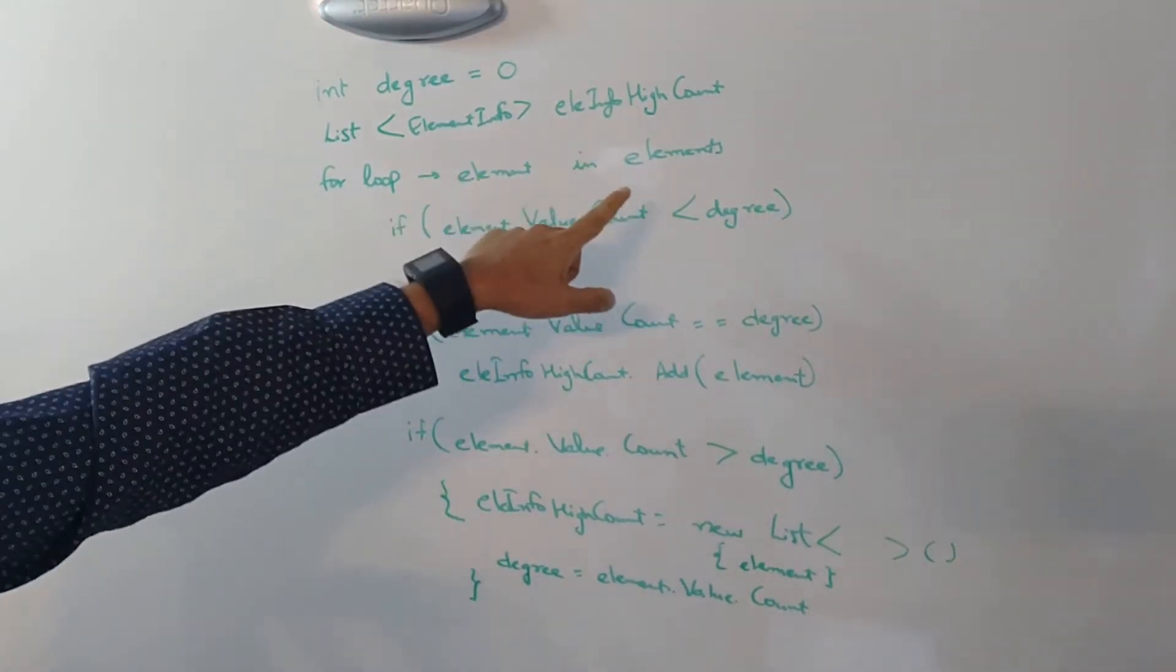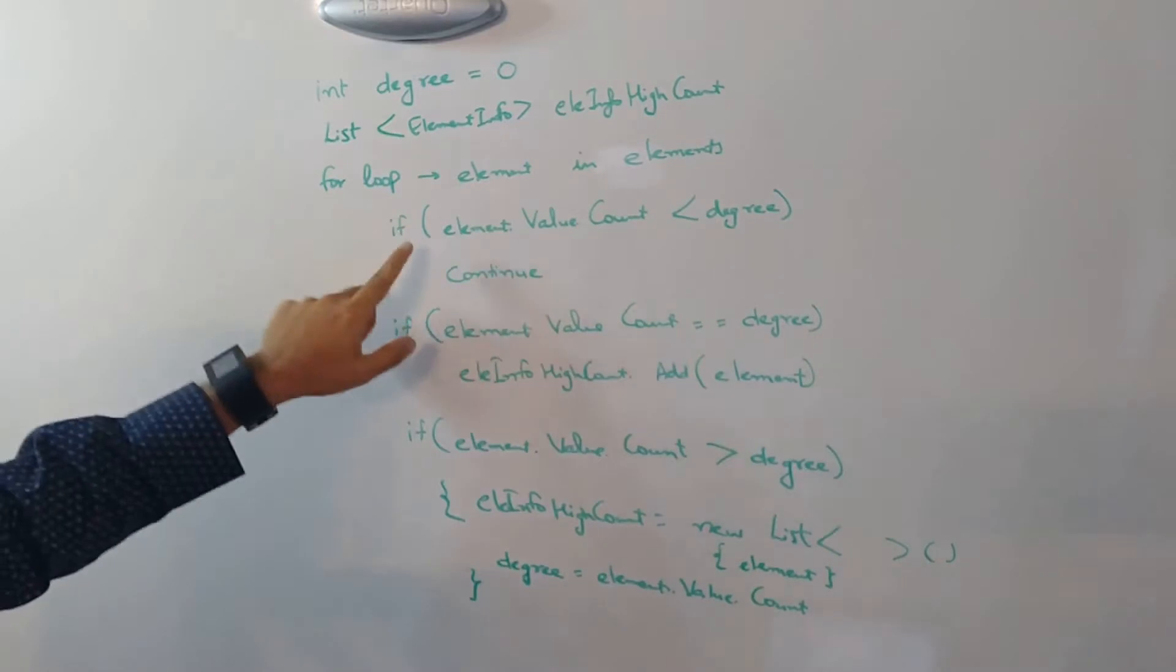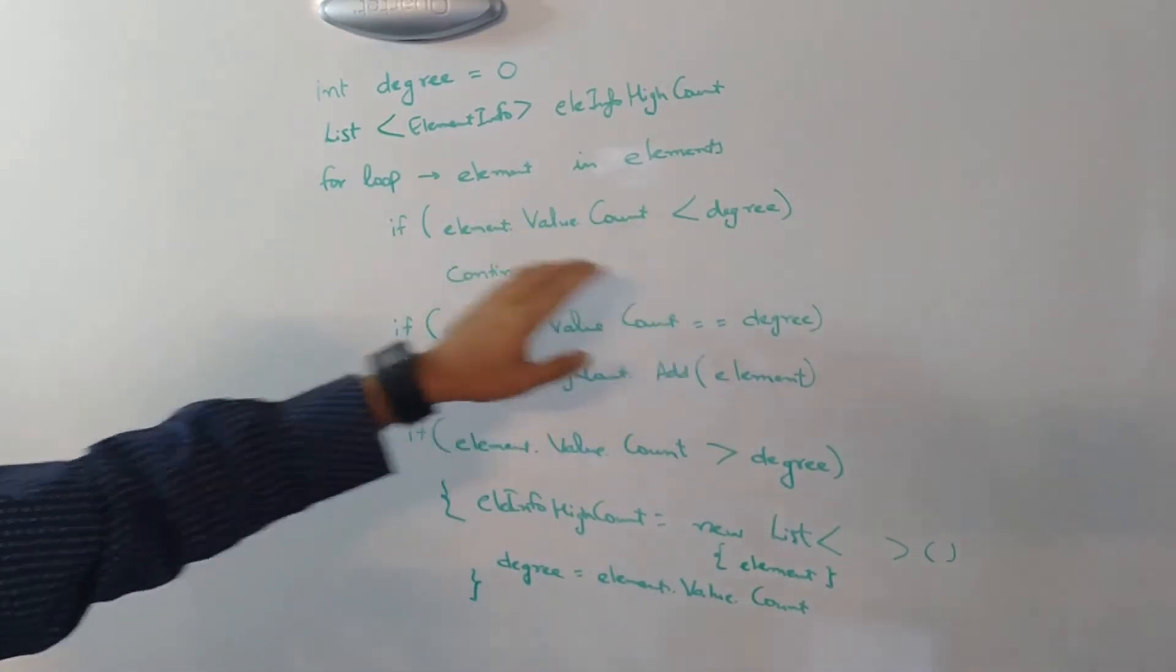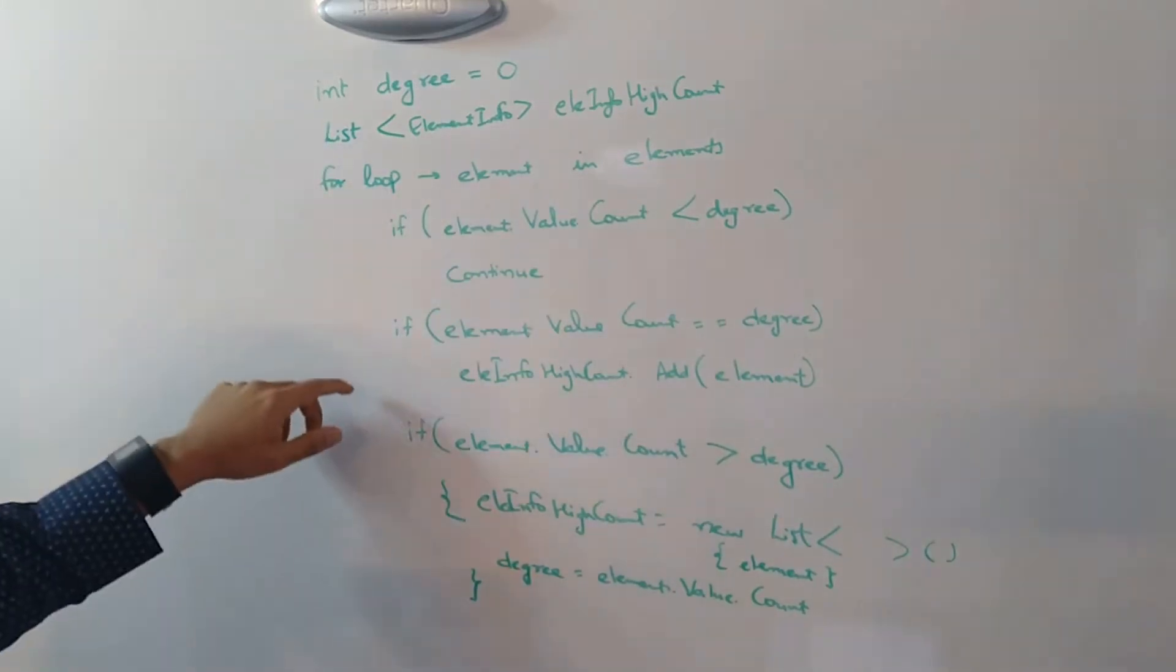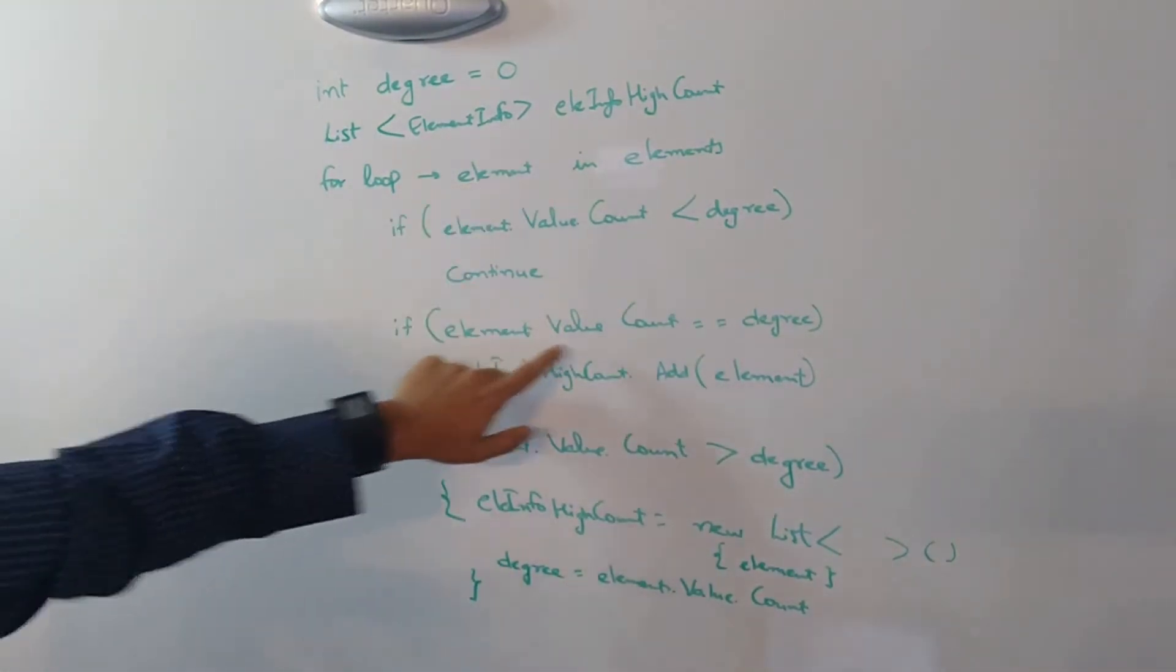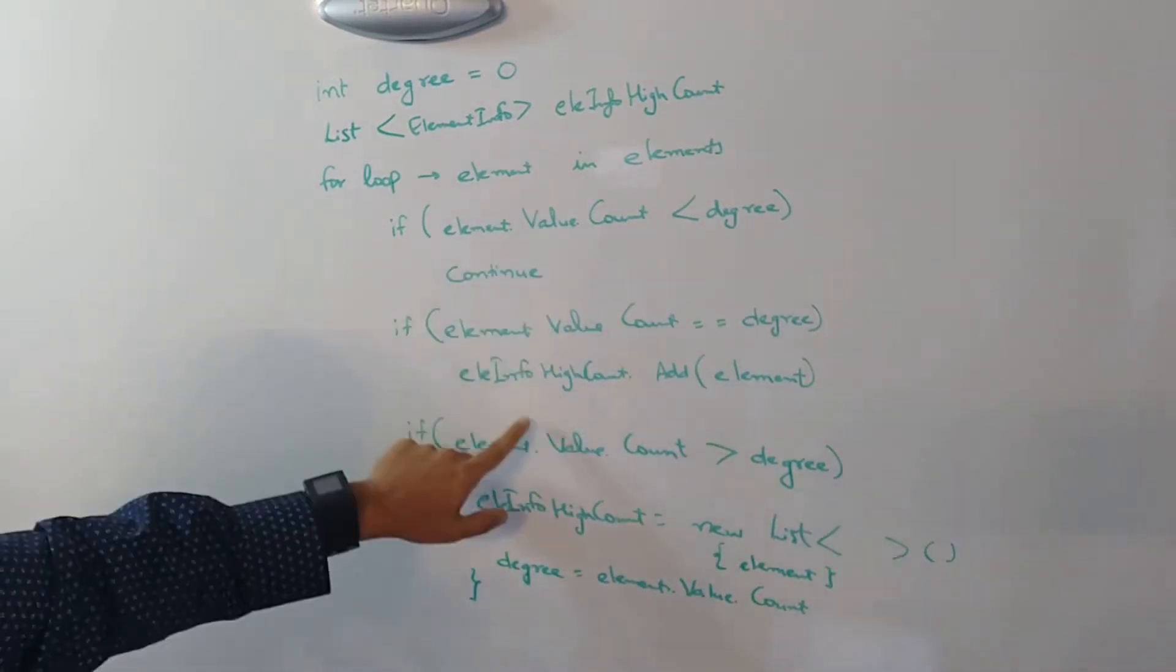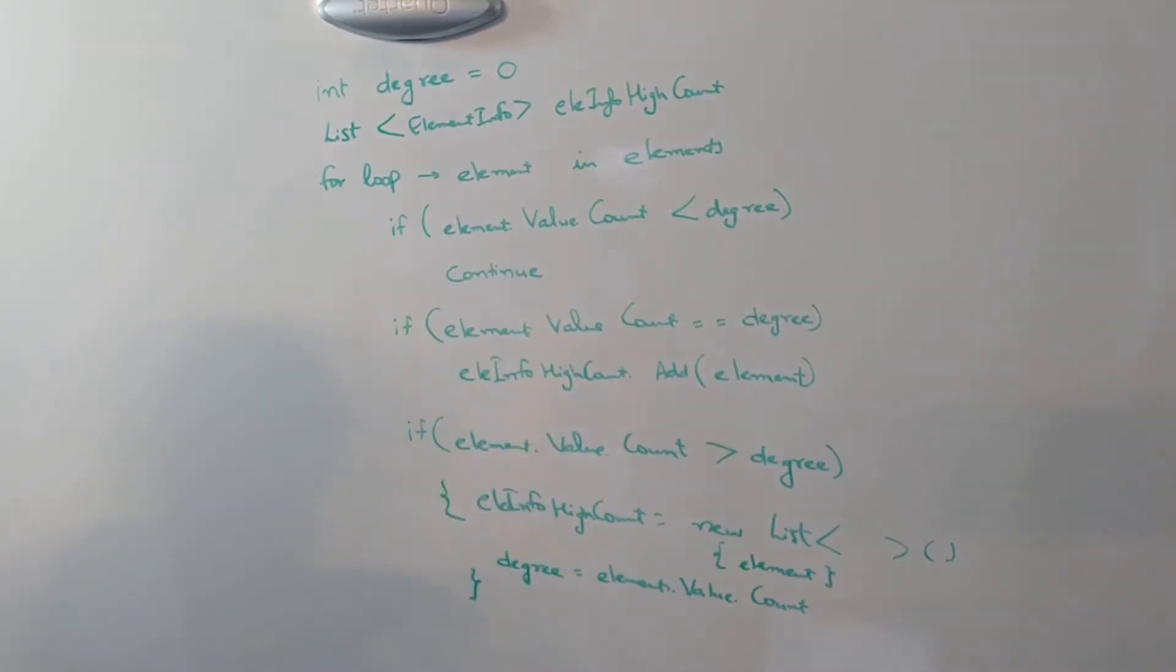Now we are looping through all the elements. If the count of that specific element is less than the degree, we continue with the loop. If the elements value count is equal to the degree, then we simply add it to our list of element info with highest count.